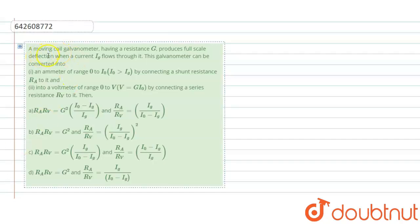Hi guys, the question for today is: a moving coil galvanometer having a resistance of G produces a full scale deflection when current IG flows through it. This galvanometer can be converted into, first one, an ammeter of range 0 to I0, such that I0 is greater than IG.